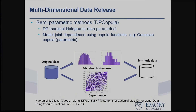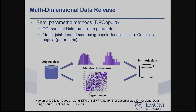To address that challenge, we developed a semi-parametric method called DP Copula. The idea is that any data can be modeled using two parts: the marginal histograms of the data representing different attributes, and the correlations or dependence between pairwise attributes.